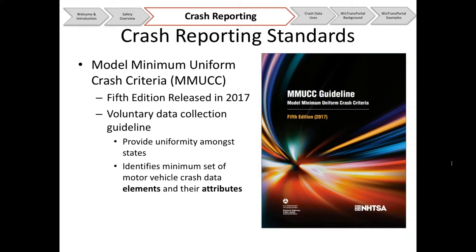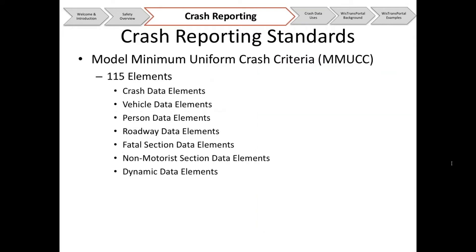For example, injury severity is an element, and the attributes are the values underneath it — such as fatality, suspected serious injury, suspected minor injury, possible injury, or no injury. For the MUCC standards there are 115 elements. We have a lot of those in our crash database. Our crash report form is at about 96% compliance with MUCC 4, or about 92% with MUCC 5. Part of this is that MUCC standards include an unknown or blank feature for some attributes.